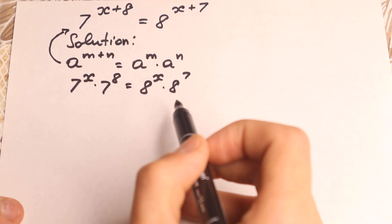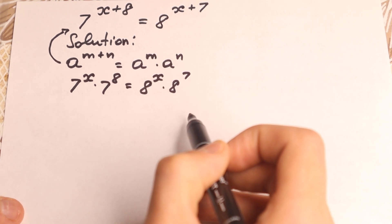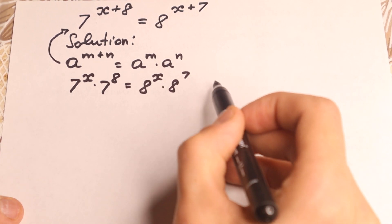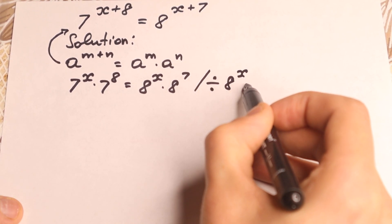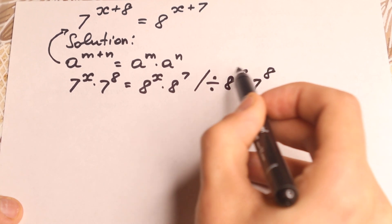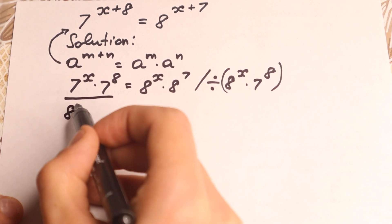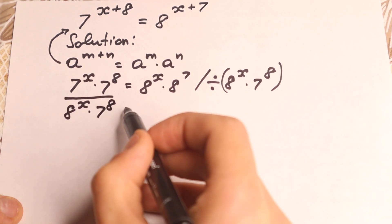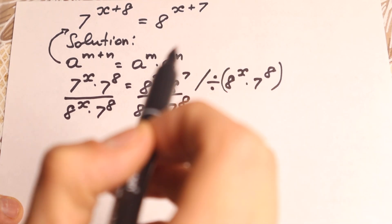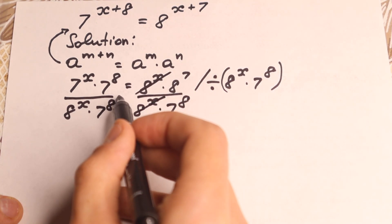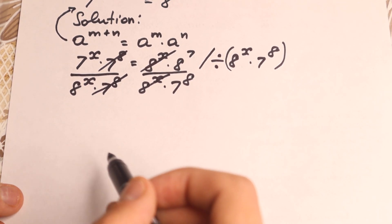Right now we need to group our variables on the left hand side and our constants on the right hand side. Let's divide both sides by 8 to the power x times 7 to the 8th power. We cancel 8 to the x from the left side and 7 to the 8th power from the right side.